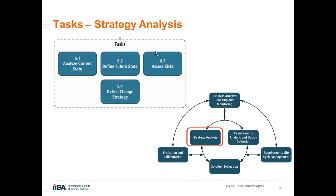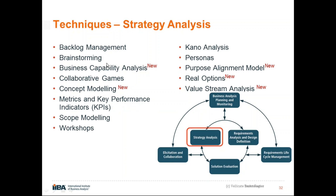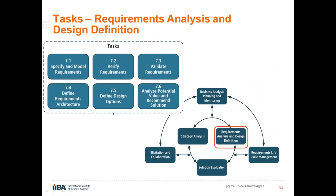Strategy analysis has four tasks, all applicable for the agile perspective: analyze the current state, define the future state, assess risks, and define the change strategy. Techniques include: backlog management; brainstorming; business capability analysis (a new technique); collaborative games; concept modeling (new); metrics and KPIs; scope modeling; workshops; Kano analysis; personas; purpose alignment model (new); real options (new); and value stream analysis (new). There are a lot of new techniques in this area.